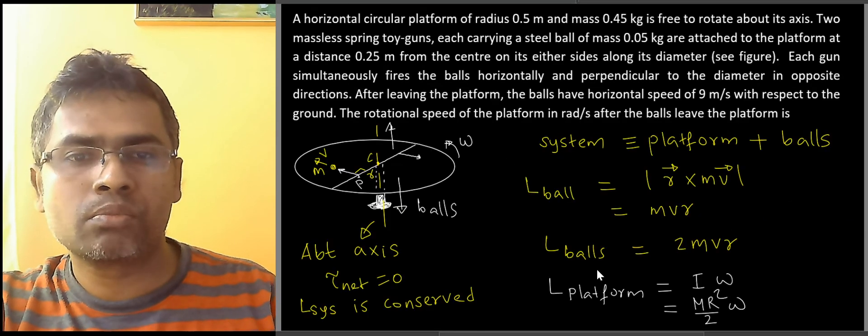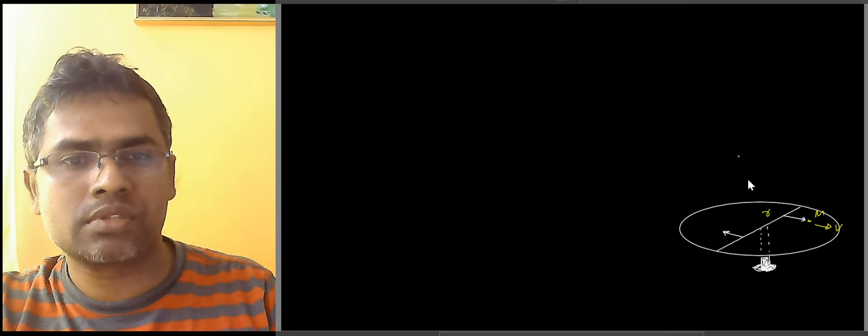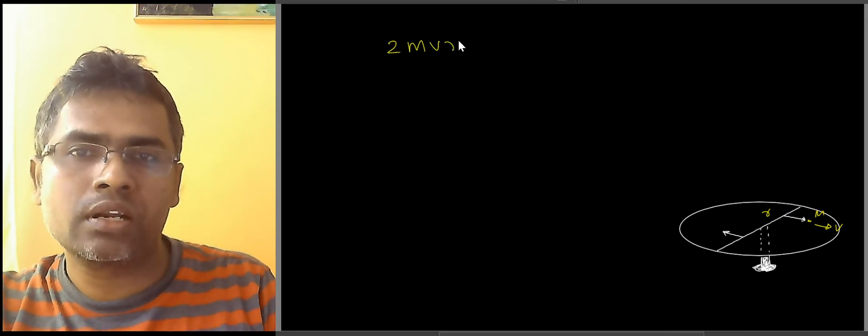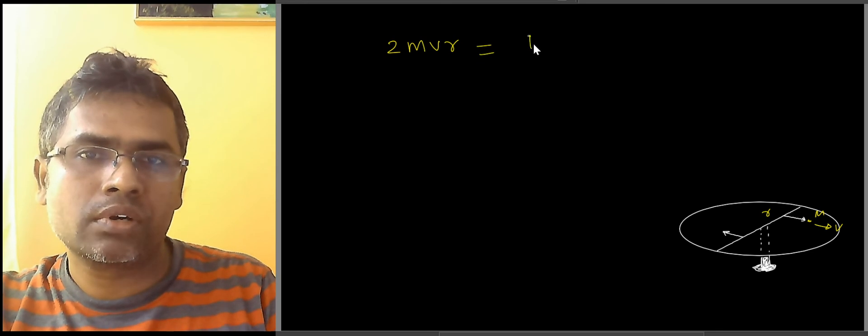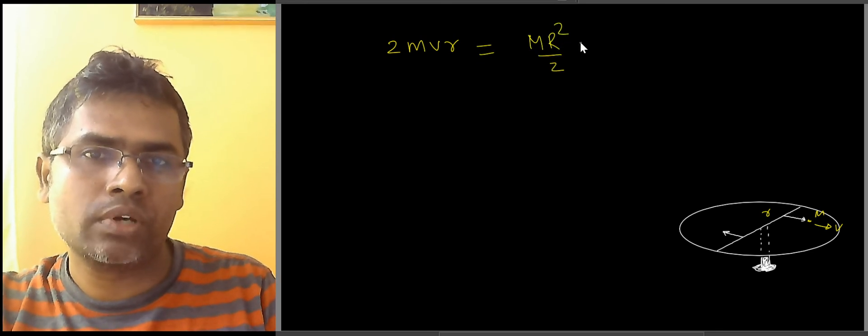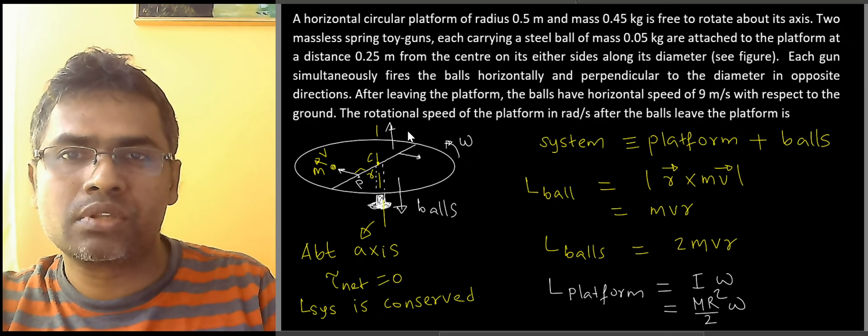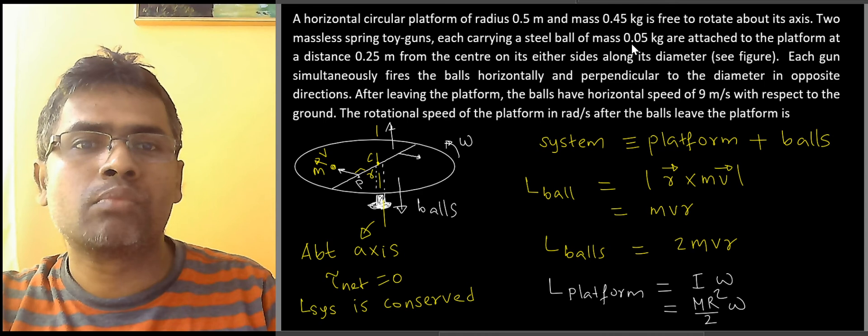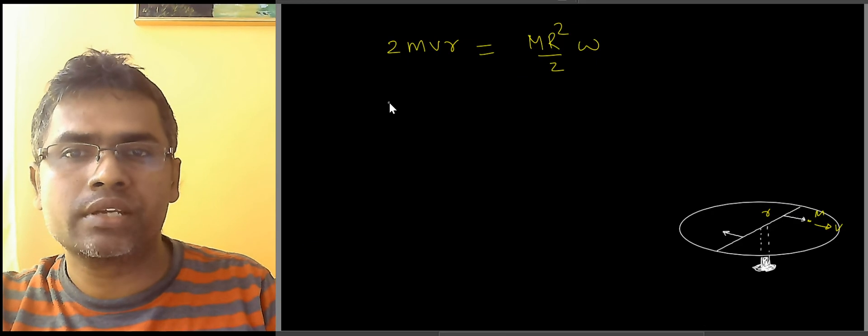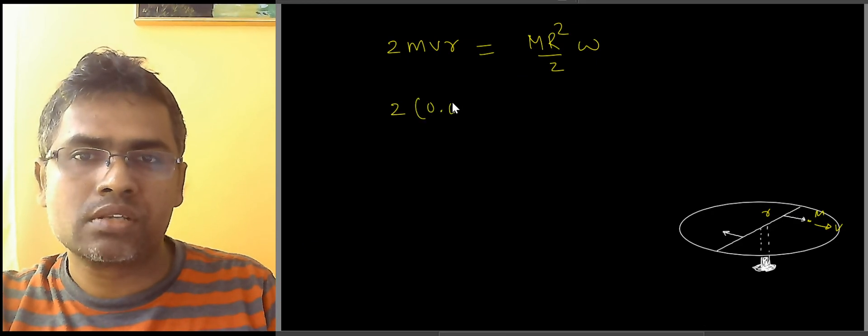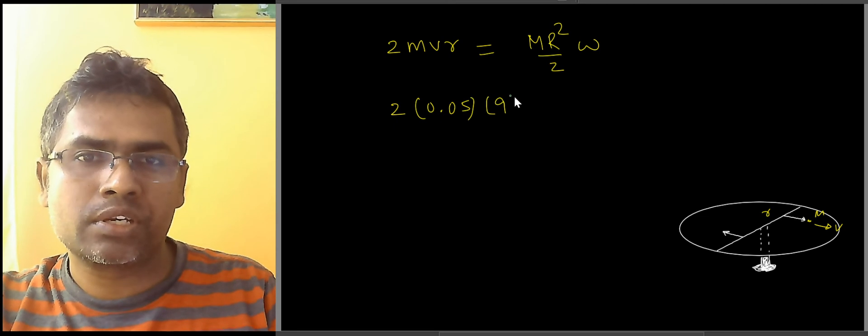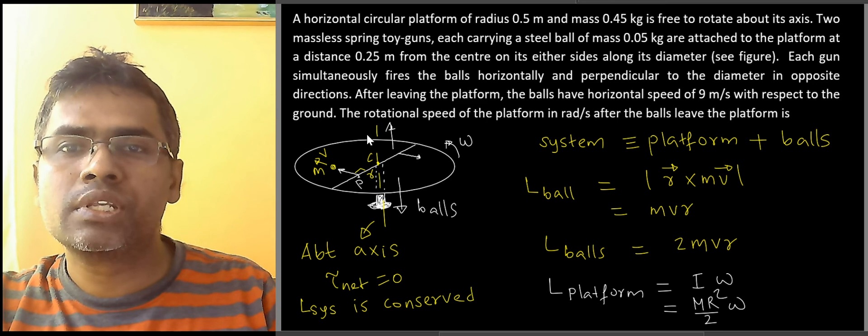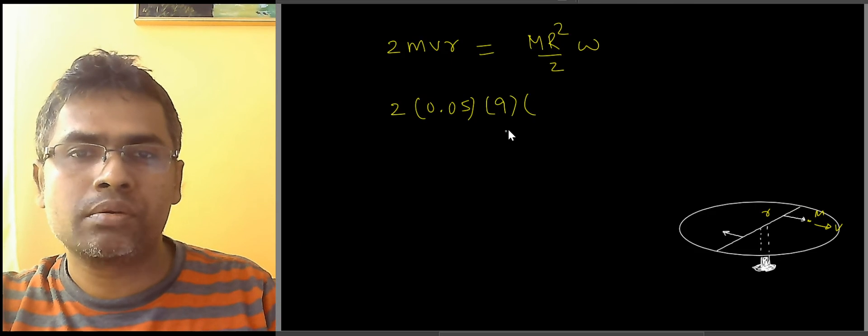If I equate the angular momentum, I am just equating the magnitudes because they are anyway in the opposite directions. I have 2mvr is equal to Mr squared by 2 into omega. Now let us substitute the value here. The mass of each ball is 0.05 kg. 0.05, the velocity is 9 meters per second and the distance of the toy gun from the center is 0.25 meters.